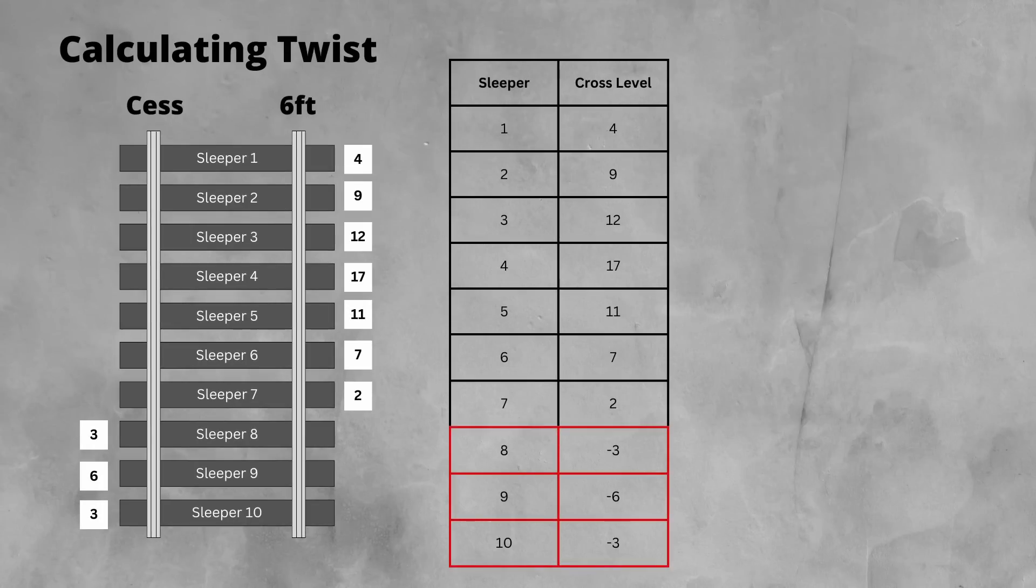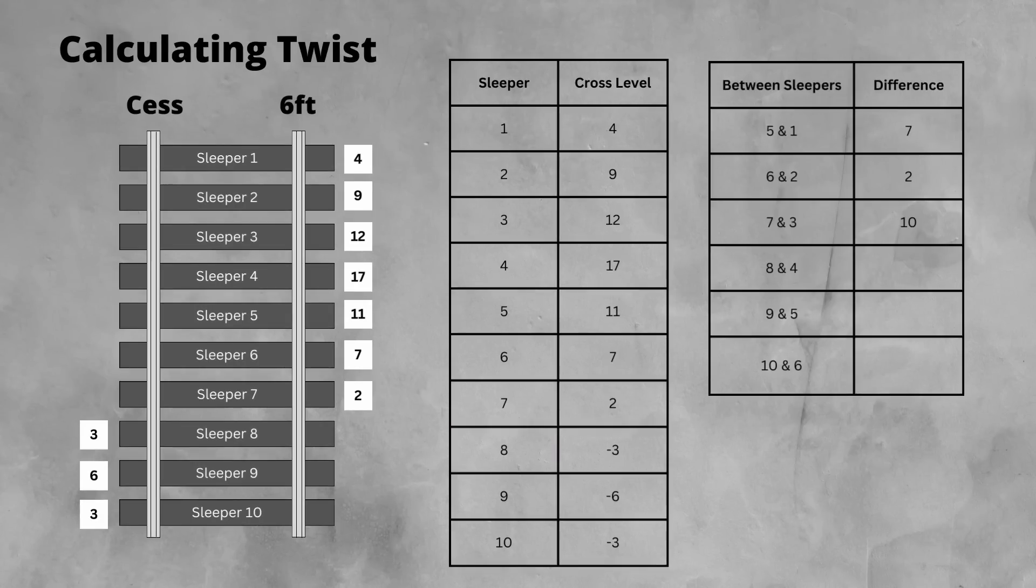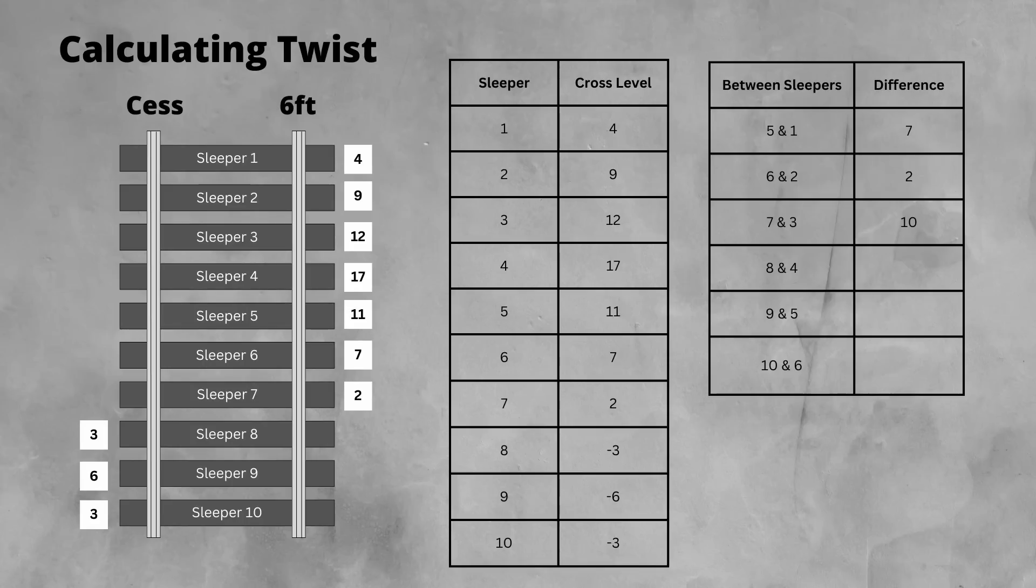When noting this on the table, you can see that sleepers 8 to 10 have negative values. This shows the difference in the high rail. For our first few difference values, we still subtract to find the difference. But when we come to the difference between sleepers 8 and 4, we need to add them together to get the difference.